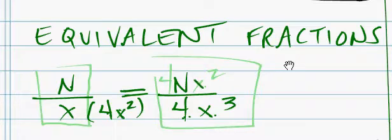So all we need to do is add 4n x squared to the numerator. 4n x squared over 4x to the third is the equivalent fraction to this one.